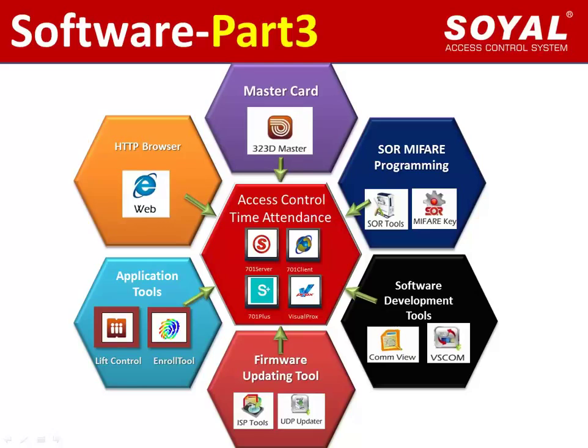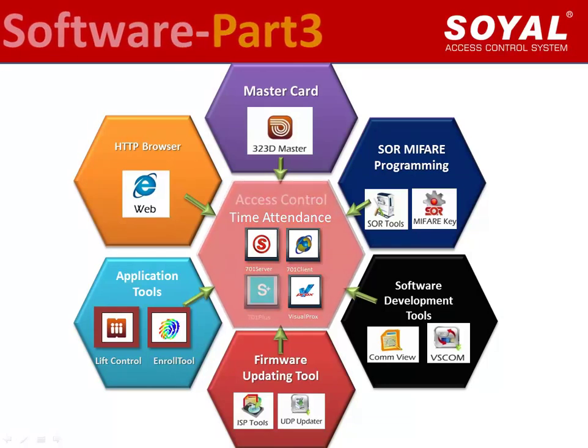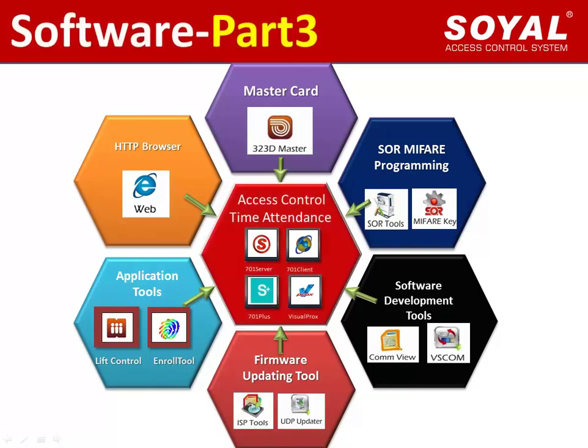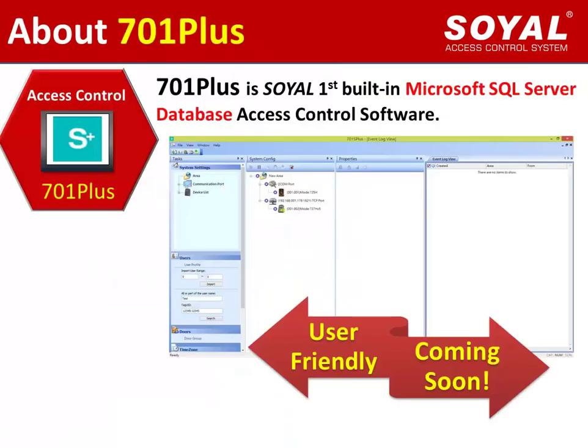SOYA Software Part 3: 701 Plus. 701 Plus is SOYA's first software building on Microsoft SQL Server database as the control software. It is currently under development. Its operation and interface is similar to Visual Procs.